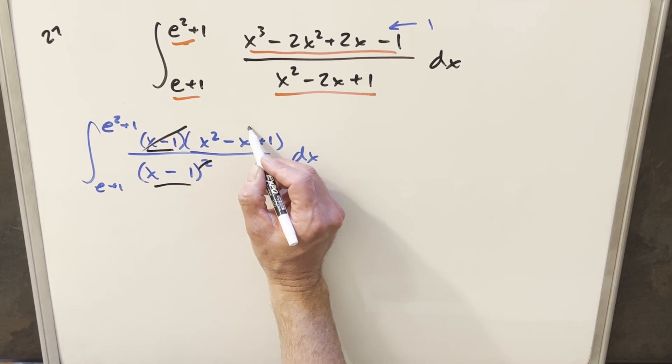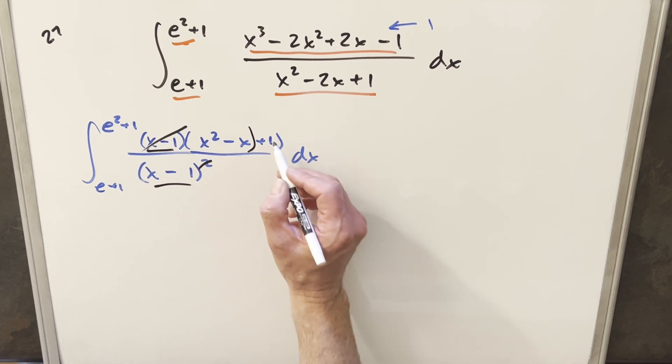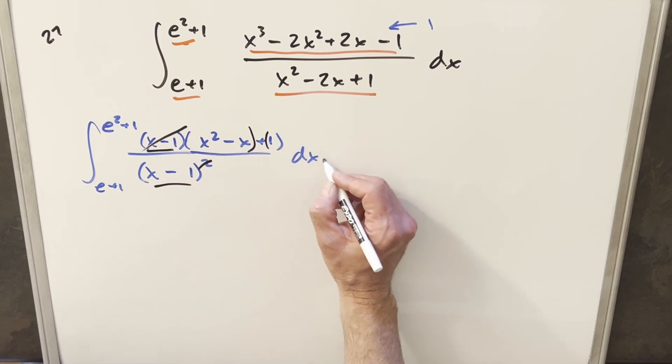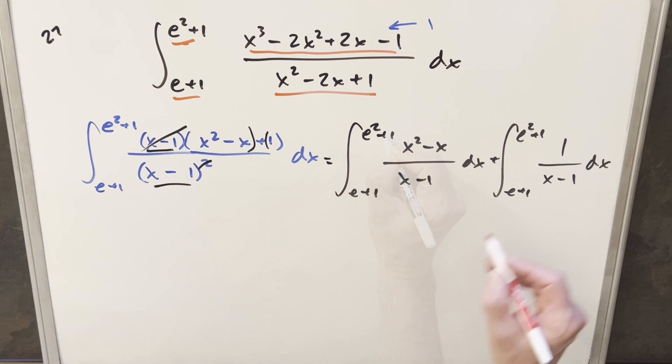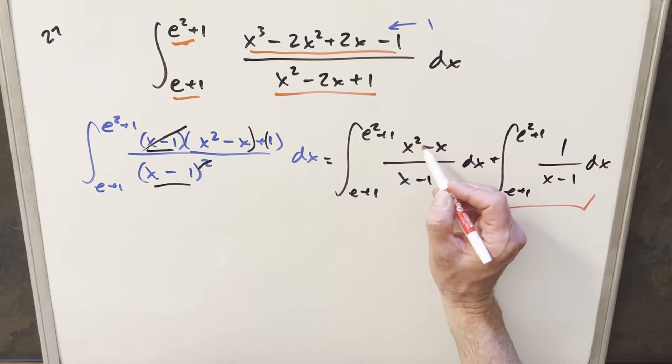And then what I can do here is actually kind of group this. I can separate this out, the x squared minus x from this plus 1. And then what we can do is break this up into two integrals. And then this one over here, this is going to be easy. This is just going to be natural log.